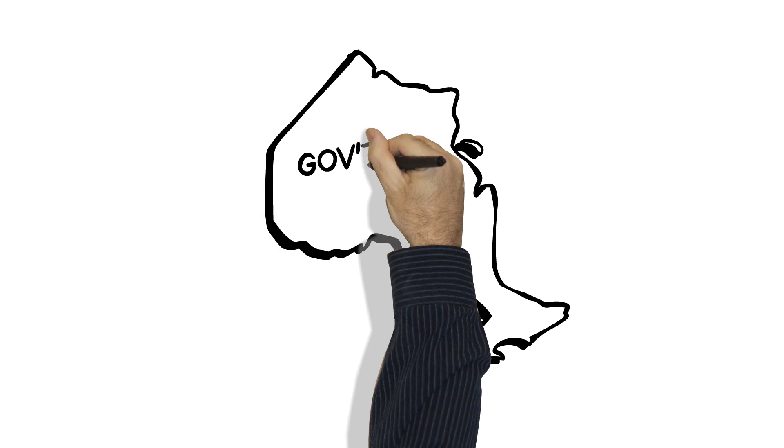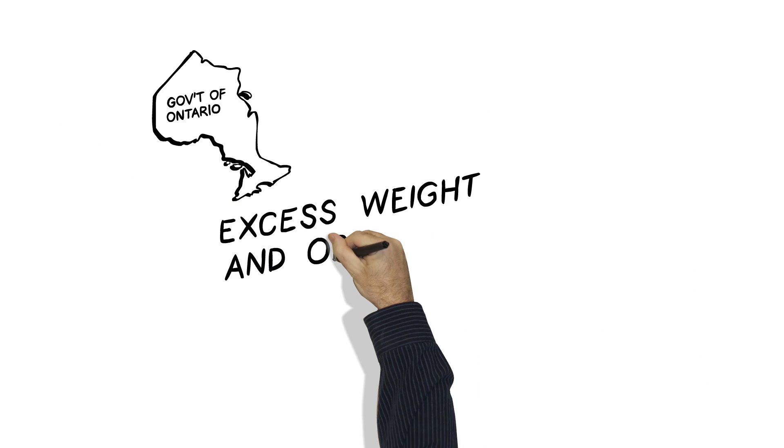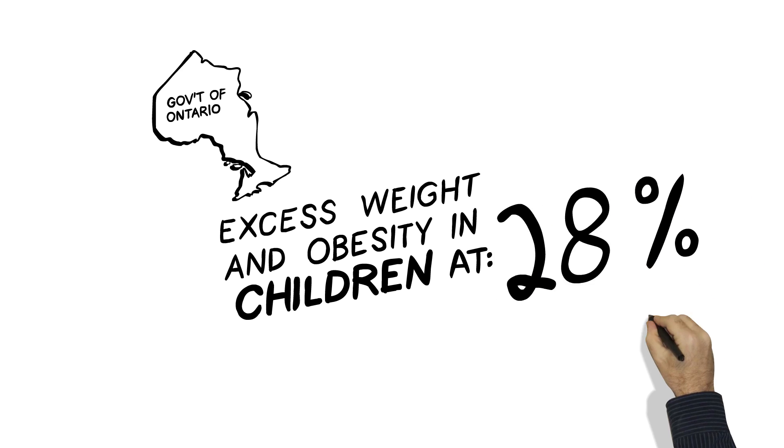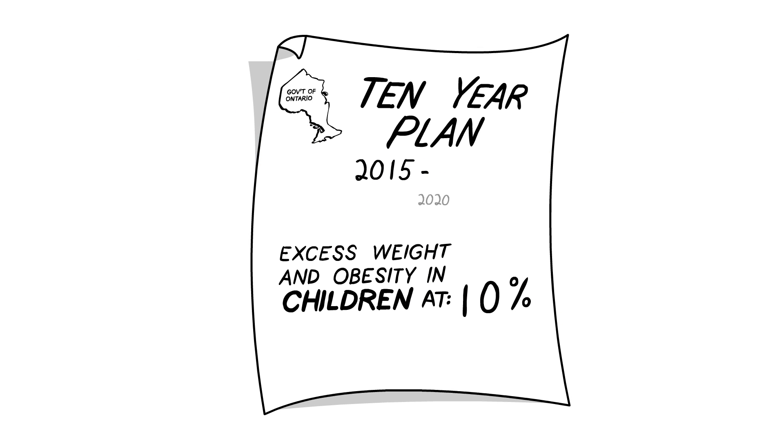The Ontario government has recently said they want to reduce the prevalence of excess weight and obesity in its children from 30 down to 10% within 10 years. And we think to realize this, our approach needs to change.